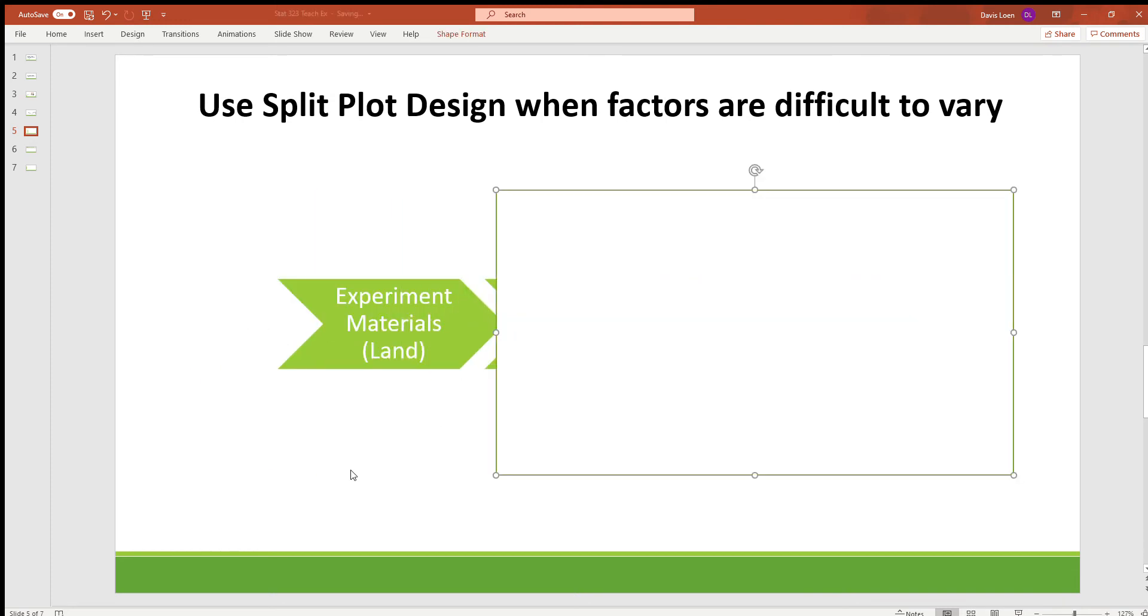So the first step of the split plot design is you take your experimental materials, in this case it's all of our land, and now we break it down into what are called whole plots. And there is a whole plot factor.